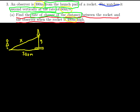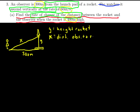We've expressed that the launch pad is 300 meters away, and the rocket is ascending vertically. Let's write down our variable definitions: y is the height of the rocket, and x is the distance from the observer to the rocket. So the ascension of the rocket is dy/dt, and we know it's with respect to time because it's 60 meters per second — so dy/dt equals 60 meters per second.